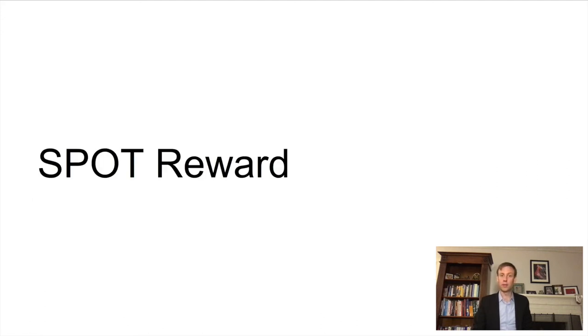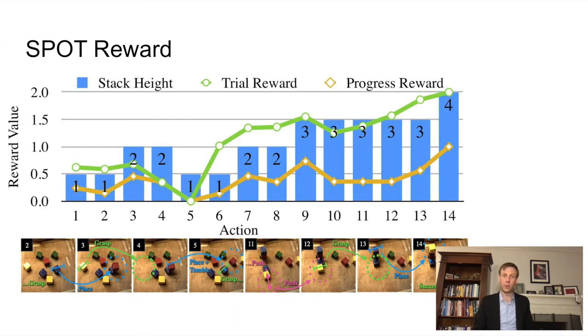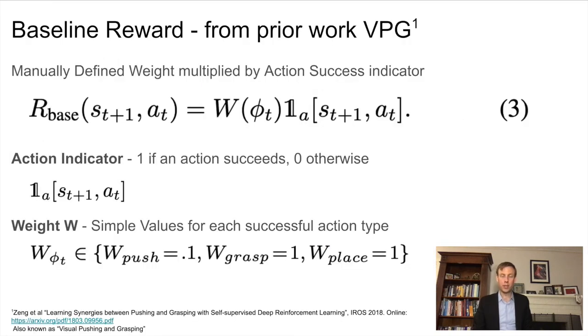Now let's talk about the SPOT reward, which is how we evaluate the key principles we've been discussing. Here we've got a sequence of actions where we're pushing, grasping, and placing as we try to create a complete stack. We've also got a plot of reward that comes out of this successful trial. We are going to build up the reward shaping function starting with a baseline from prior table clearing work, known as VPG. From there, we'll incorporate the principles we've discussed earlier and evaluate how they contribute to efficient reinforcement learning. The baseline multiplies a predefined action weight by an action success indicator, which is one if it succeeds, such as when the sensor in your gripper detects a grasp, and zero otherwise.